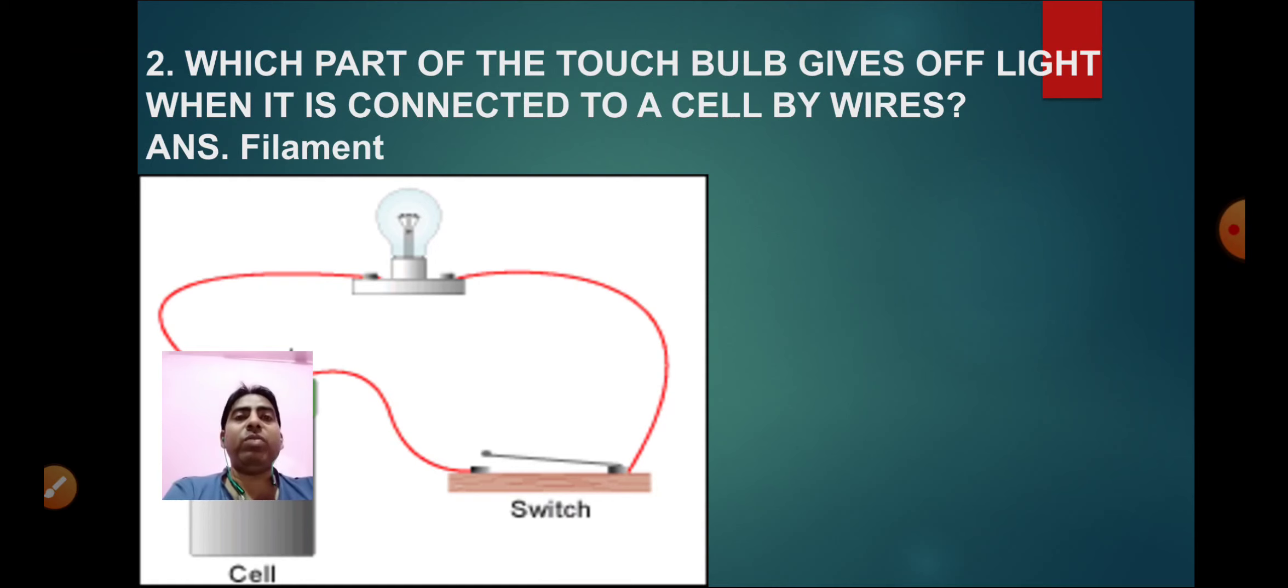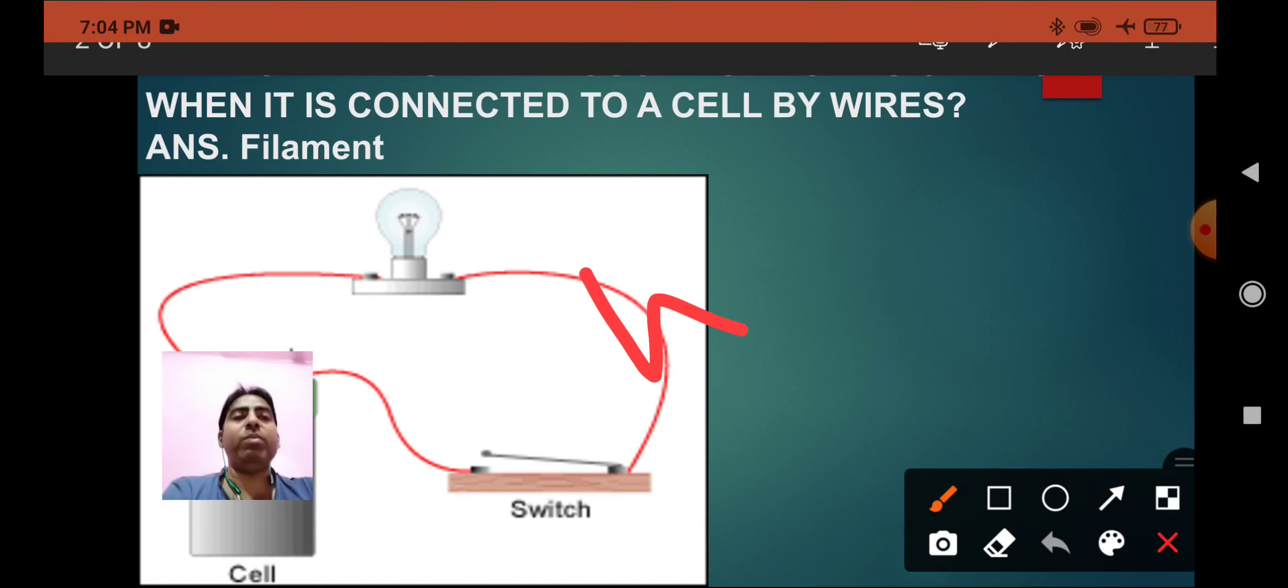Now moving towards the second question: Which part of the torch bulb gives off light when it is connected to a cell with a wire? The answer is filament. This filament is made up of tungsten whose symbol is W. It is used in the bulb because it has high melting point, 3410 degree Celsius, high resistivity. It does not melt easily, so tungsten is used in the filament.